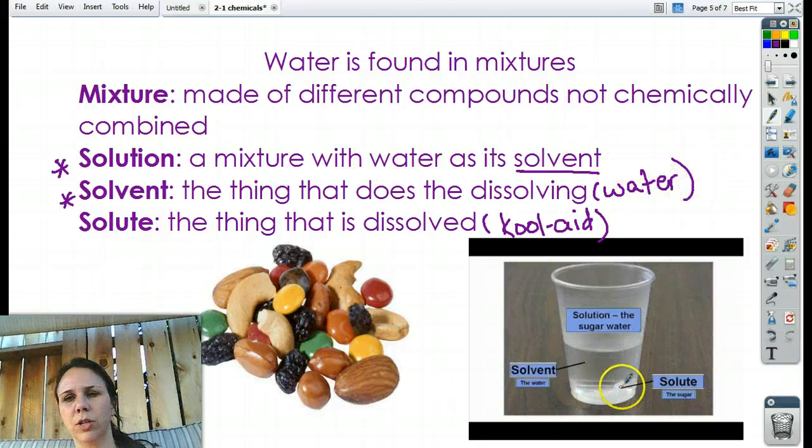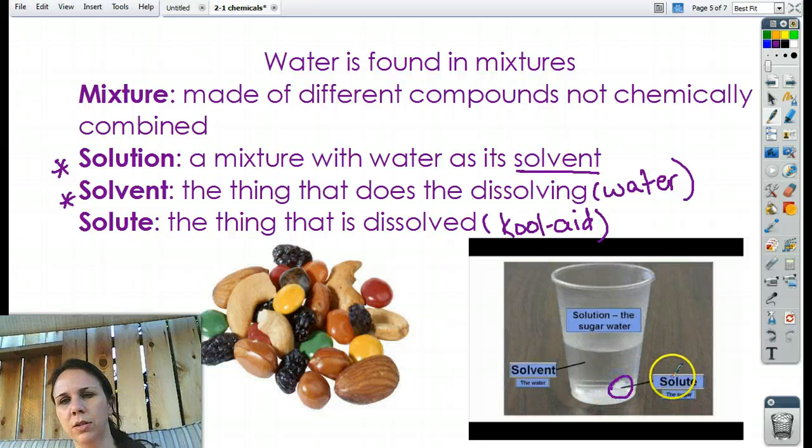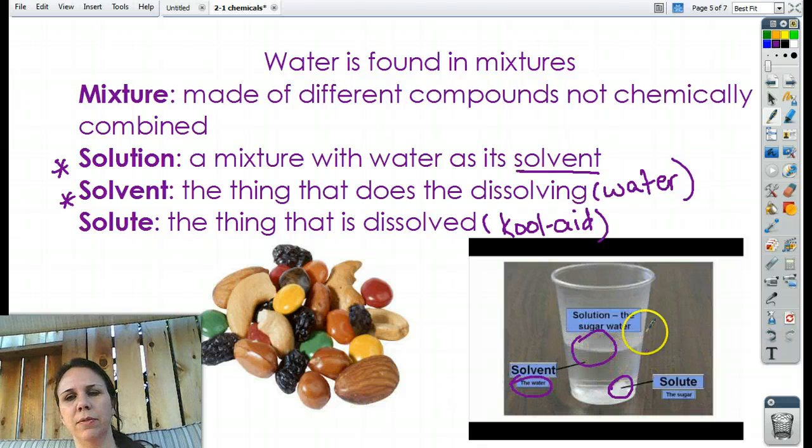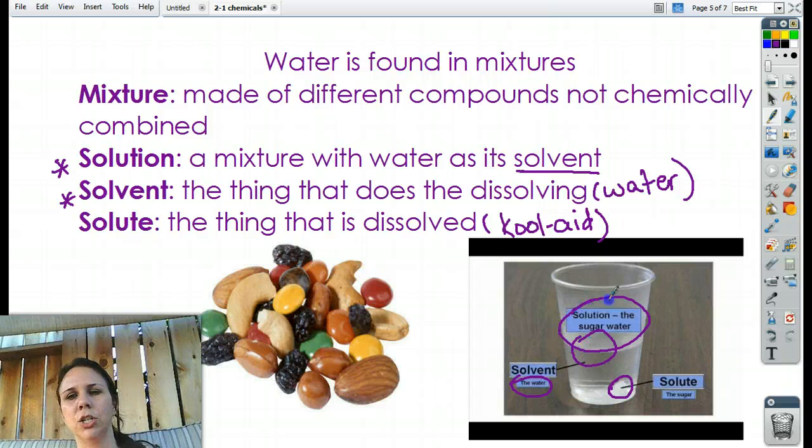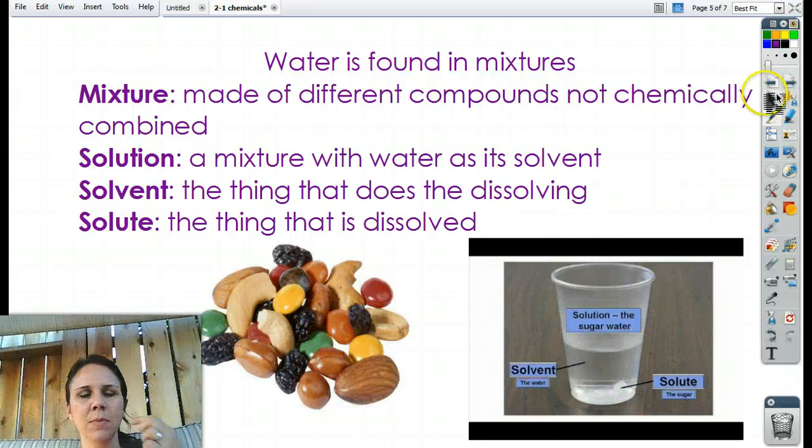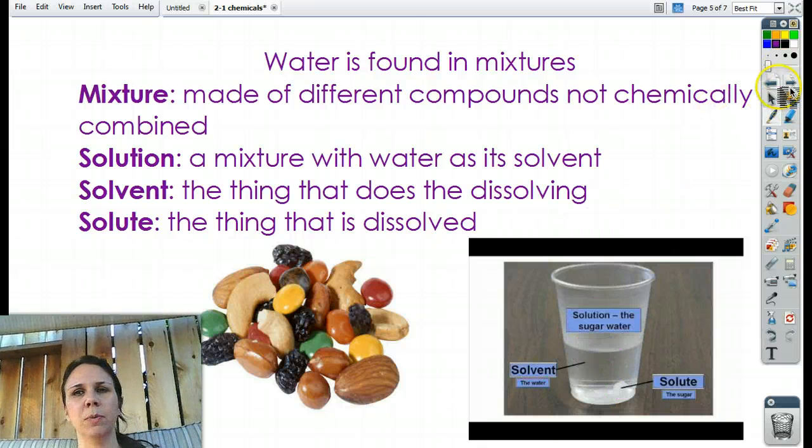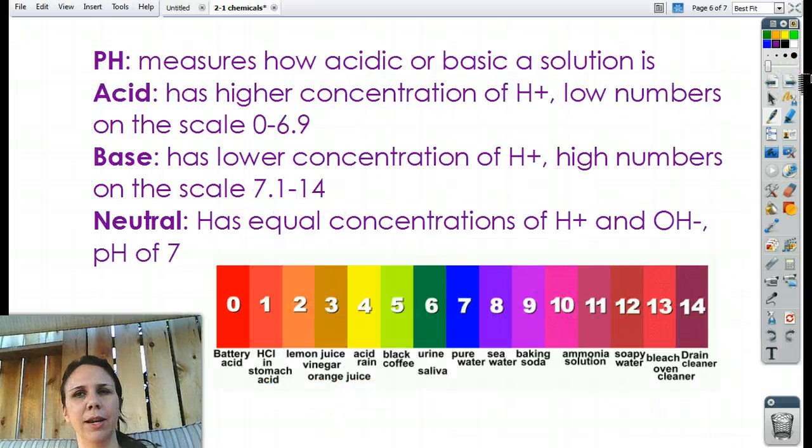Okay. So, here's a little cube of sugar right there. Solute, the sugar thing being dissolved. Solvent is the water, the thing doing the dissolving. Together, they make a solution. So, solvent plus solute equals solution. Okay. So, water, very, very important, especially for all the processes that go on in the body.